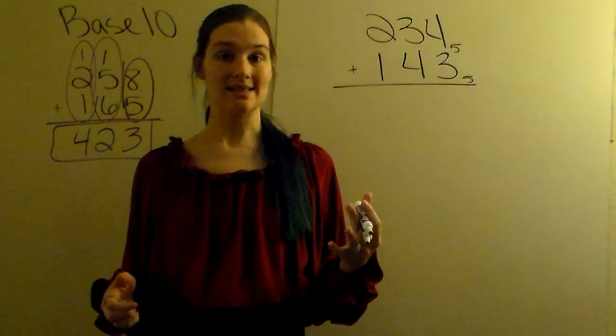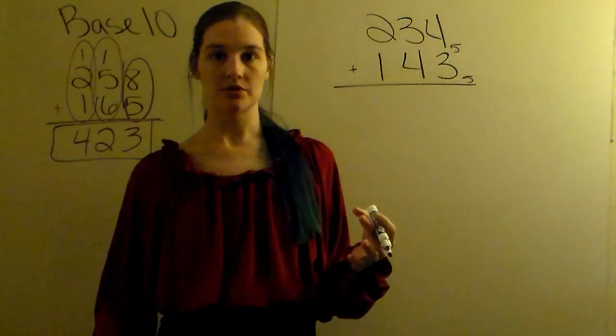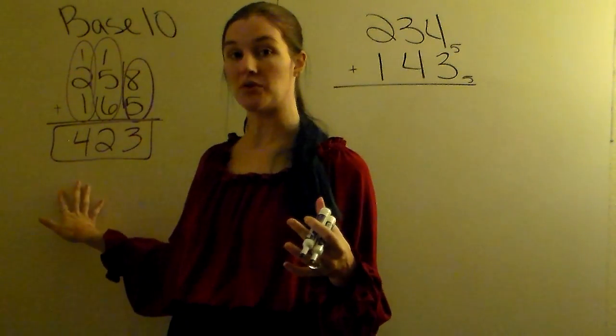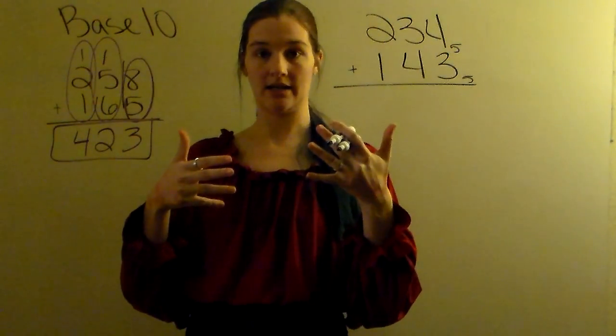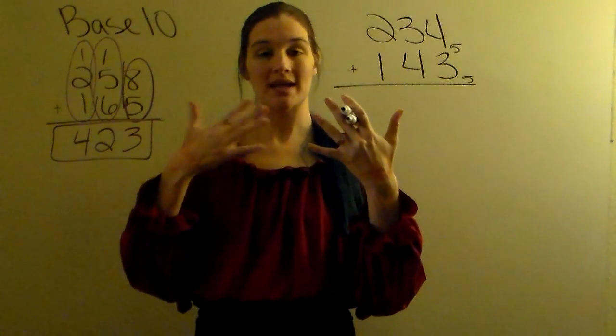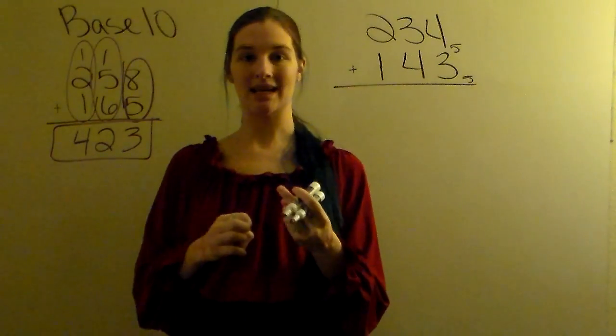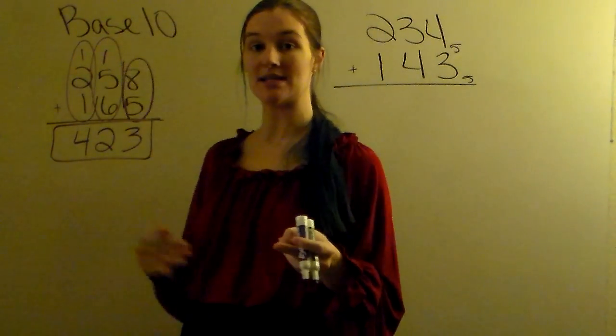So base 10, we're allowed 10 symbols: 0, 1, 2, 3, 4, 5, 6, 7, 8, 9. It's 10 symbols because the 0 takes the 10th one. Once we hit the next 11th symbol, we start combining and we make 10. So when we hit 10 in base 10, that is our 10.